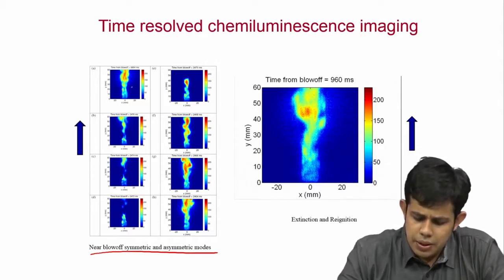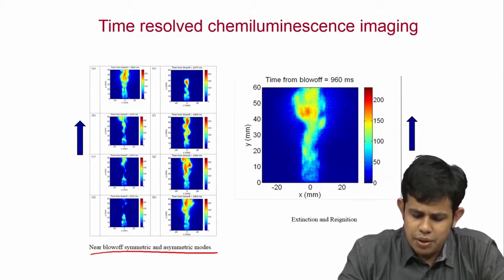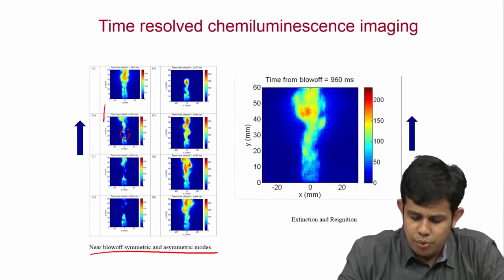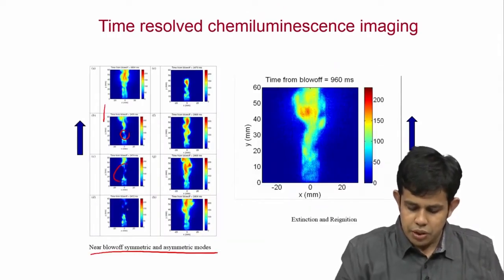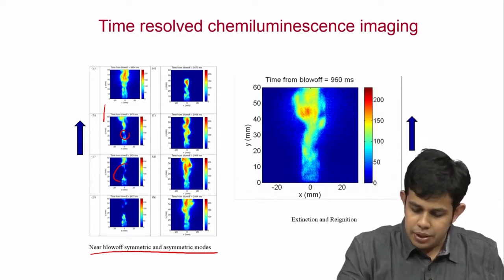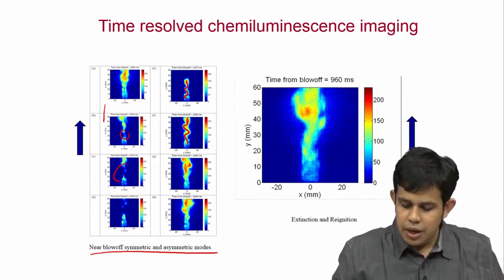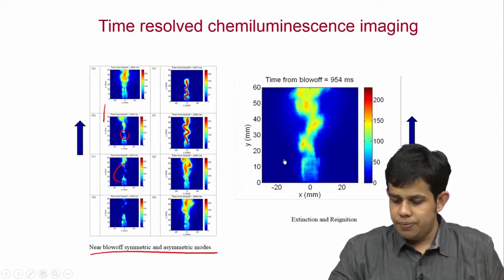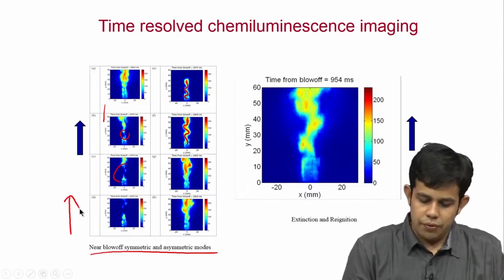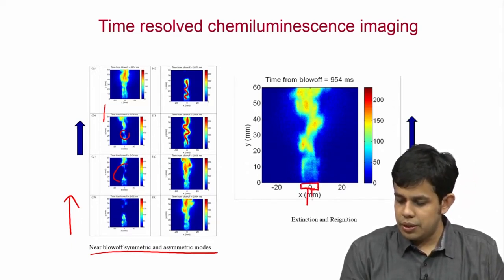At about 6.8 seconds before blow-off, the flame was stable, but then you see large flame holes forming — regions with no chemiluminescence and no heat release. Then the flame becomes sinuous in structure, and then it re-establishes. The flow goes from bottom to top in each of these images, and the flame holder is located at the base.